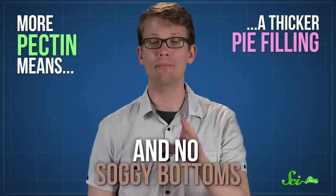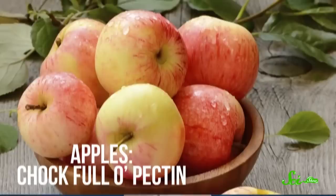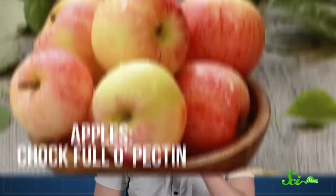For thicker pie filling, you can choose fruits that have more pectin naturally, like apples. You can even add an apple to a pie made with low pectin fruits, like strawberries, for more thickening power. And a little acid will make pectin stronger and more stable, so some bakers add lemon juice to pie filling. However, heat destroys pectin, so even a pie with lots of pectin can turn to mush if you overcook it.